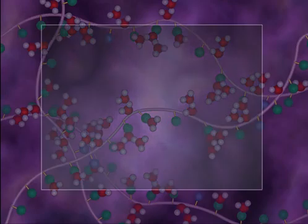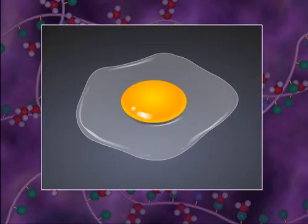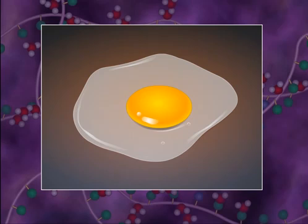One example of the consequences of unfolding and reassociating protein molecules is coagulation of egg white. Frying an egg is no more complicated than denaturing the egg white protein.